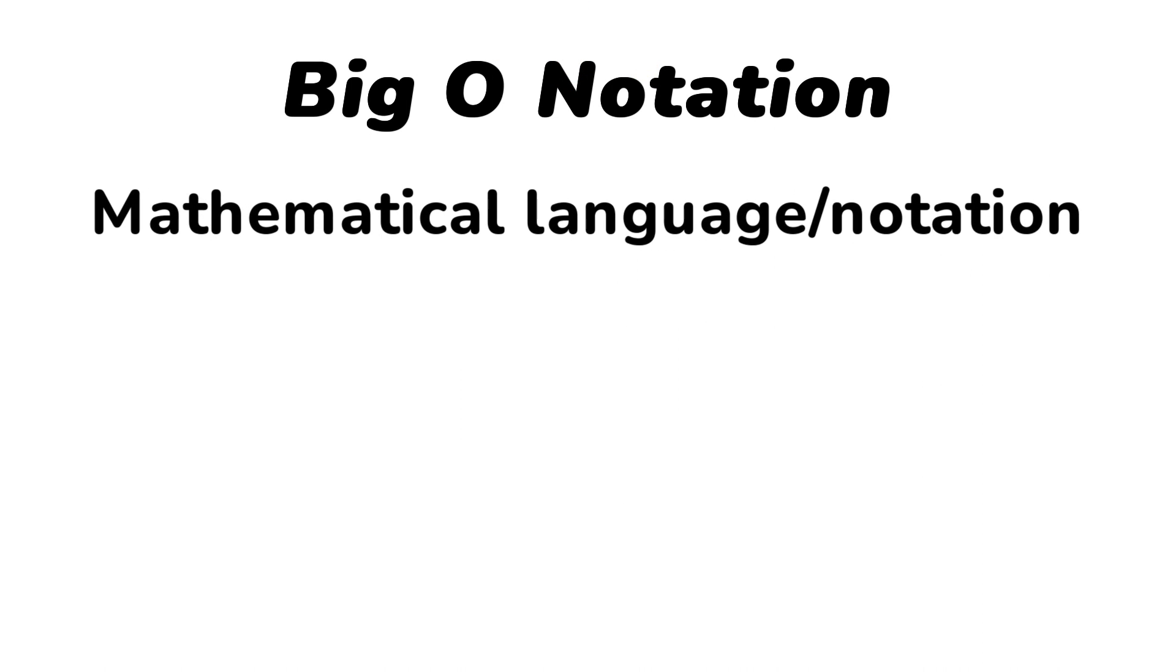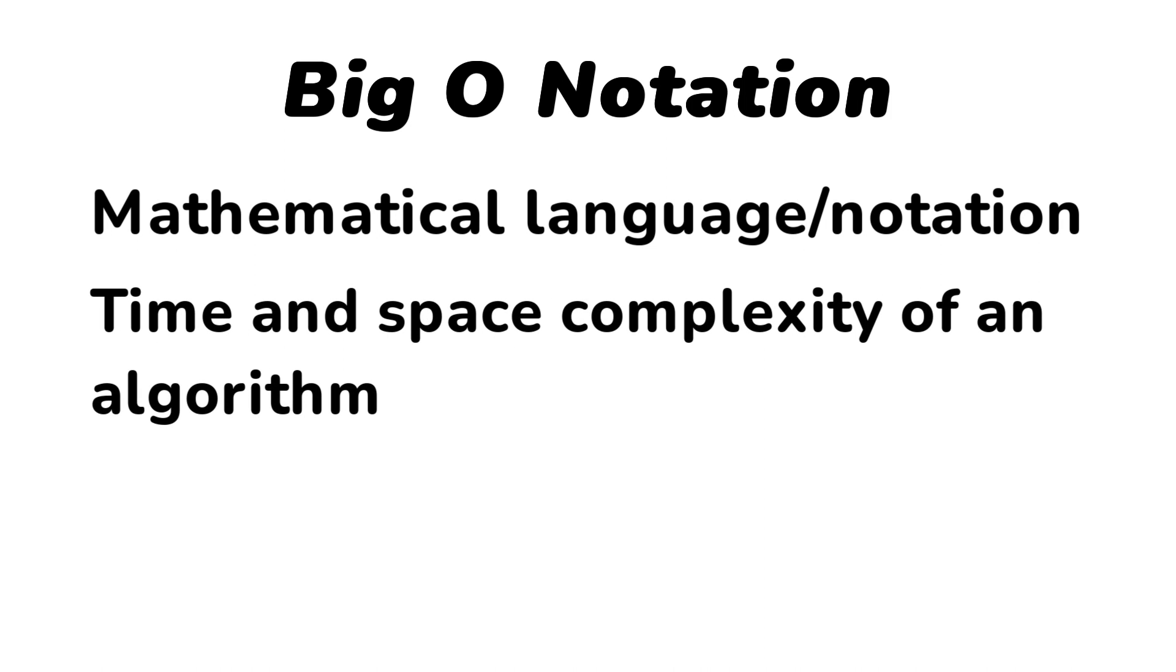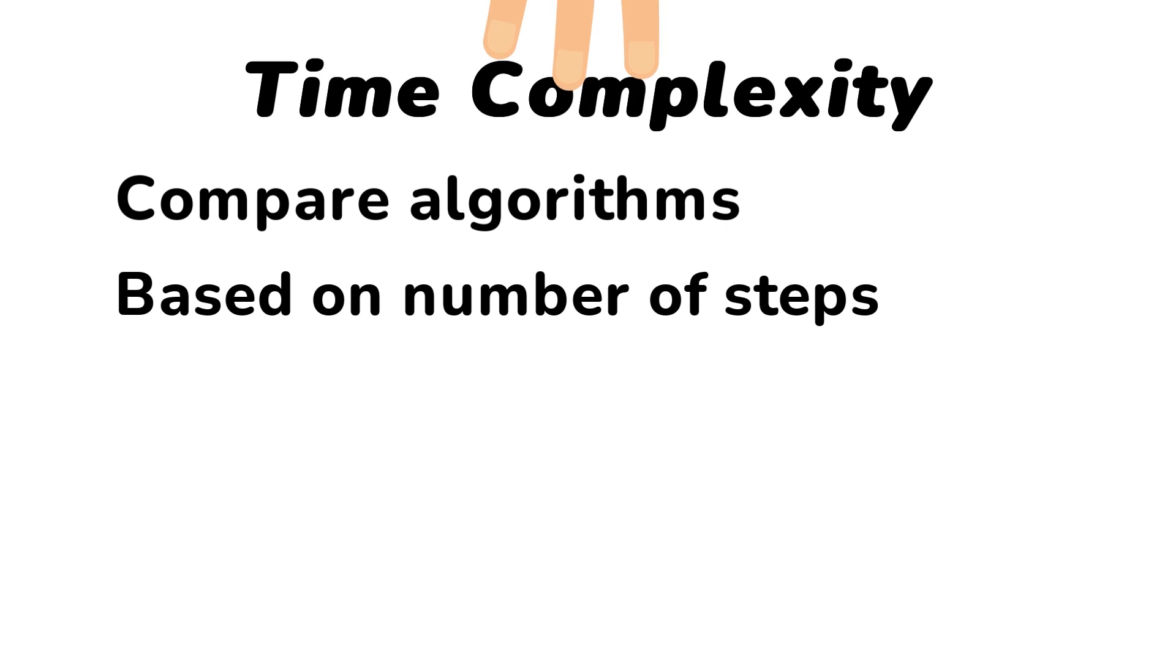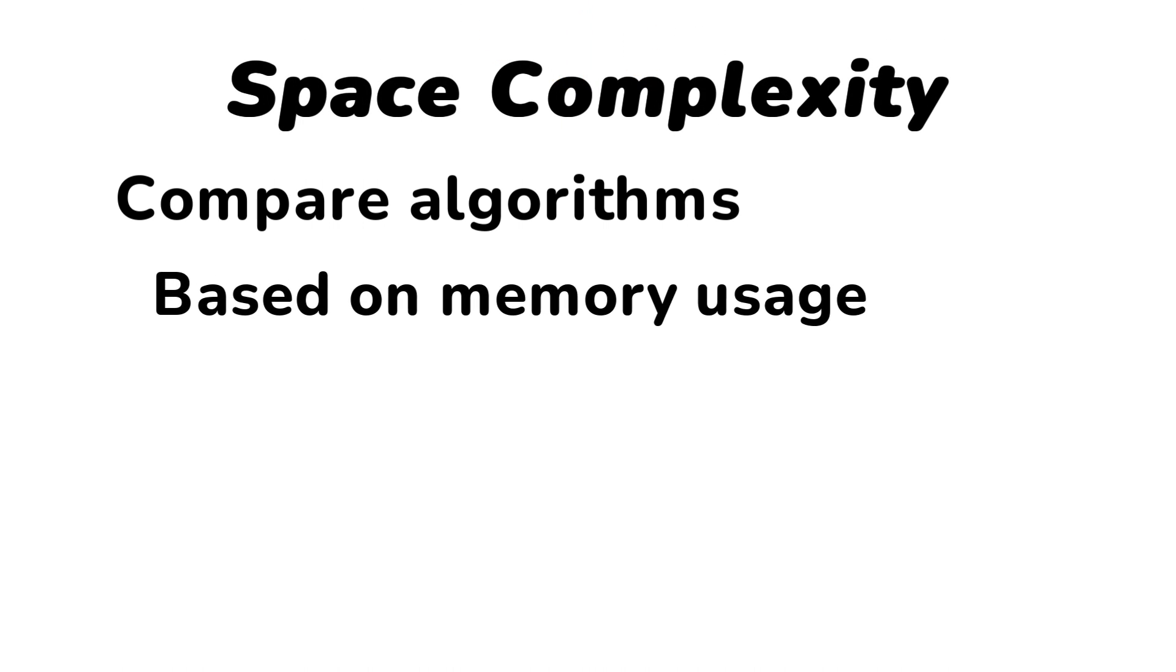Big O notation is a mathematical language which allows us to talk about the time and the space complexity of an algorithm. It will compare an algorithm by looking at the number of steps it has to take in order to execute. This is what we call the time complexity of an algorithm. We also have space complexity which tells us how much memory is needed for the algorithm to run.